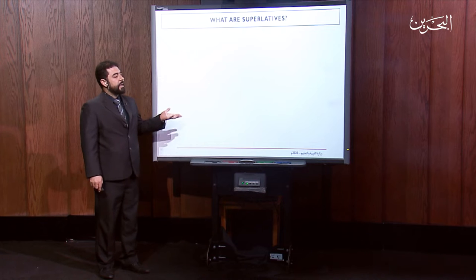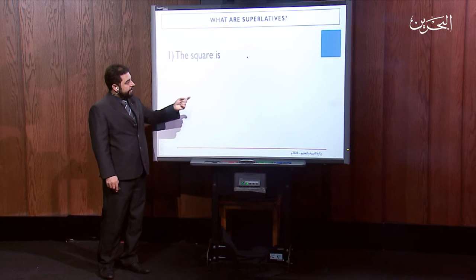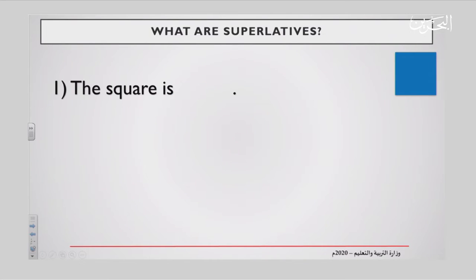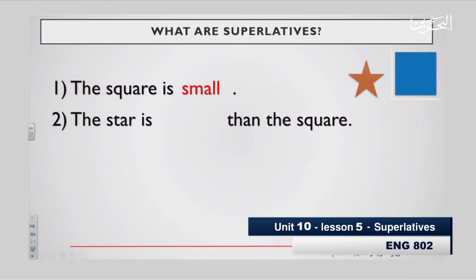So, what are superlatives? Look at the blue square in the corner. Let's read the sentence. The square is — you have to use an adjective to fill in that gap. The adjective I have chosen is small. So, the square is small. Now, I added a star. I'm going to compare the star to the square. The star is smaller than the square.